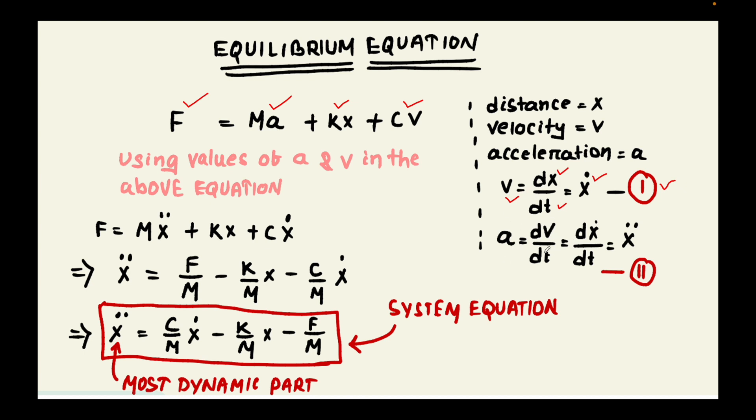Next, acceleration could be rate of change of velocity where rate of change of velocity could be dX dot by dt. We have now two differentiations. Acceleration can be represented with the help of X double dot and velocity can be represented with the help of X dot.